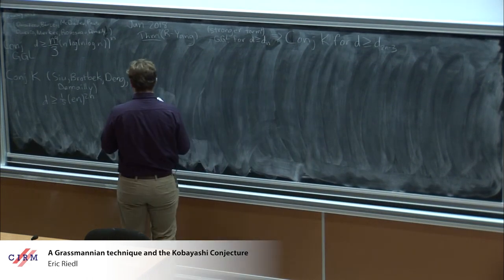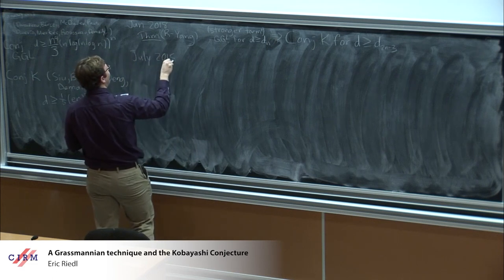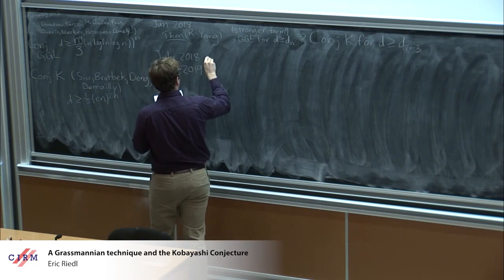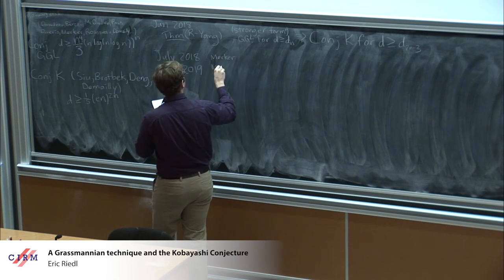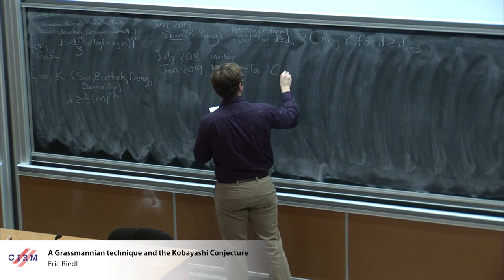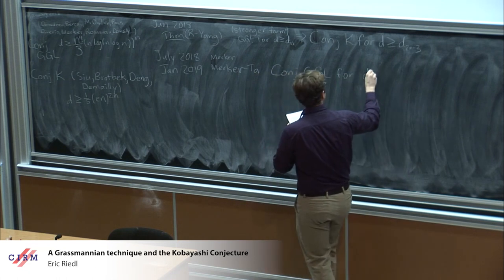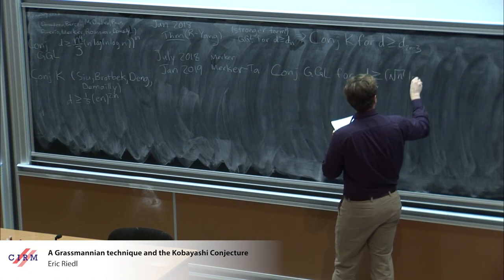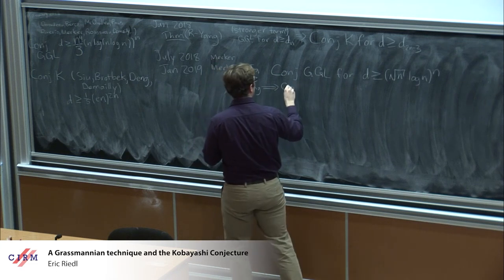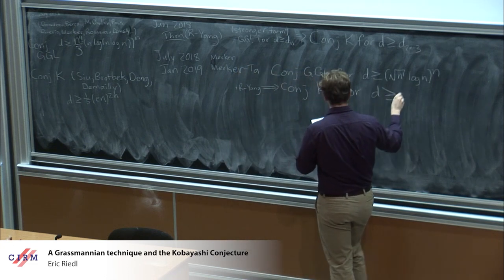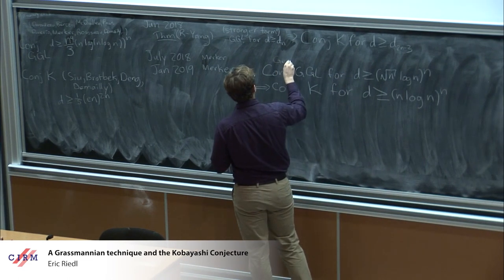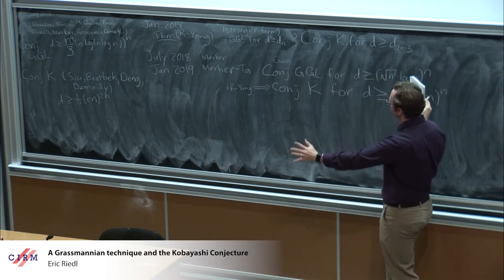That was in June. Then Merker in July 2018 had an immediately improved bound. Then in January 2019, just last month, Merker and Ta proved the Green-Griffiths-Lang conjecture for D at least sqrt(n) · log(n)^n, and then used our results to prove the Kobayashi conjecture for D at least n · log(n). Everything I say from now on is about hypersurfaces.